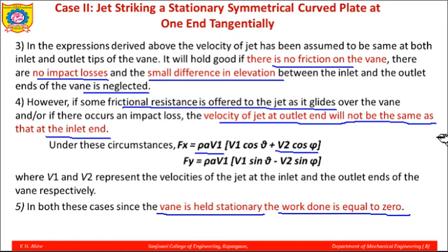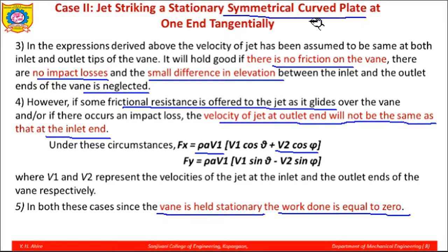This single video covered two cases for stationary curved vanes. The case just discussed is the unsymmetrical curved plate with tangential entry of the jet, and we also covered the symmetrical curved plate where the jet enters tangentially — symmetrical meaning theta equals phi. This concludes all the cases of stationary curved vanes. Thank you.